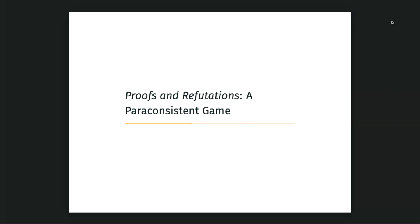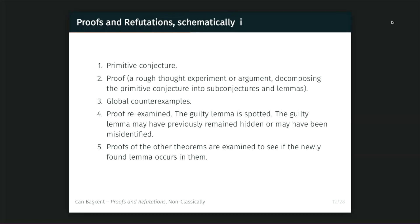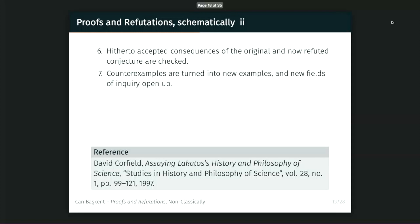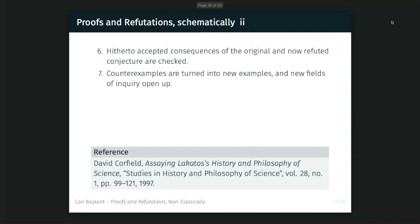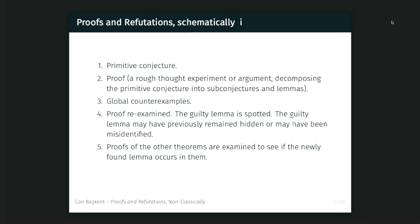My claim in a nutshell is that proofs and refutations is a paraconsistent game. The elements of these games: from Corfield's essay we know the schema of proofs and refutations, and there is a big literature about this. What I can show is that this algorithm is very much a paraconsistent system. You have a counterexample and you have to work with it. Apart from the original conjecture and proof elements, you need to work with global counterexamples, make deductions with those counterexamples, and also ensure that some things are not deducible from them.